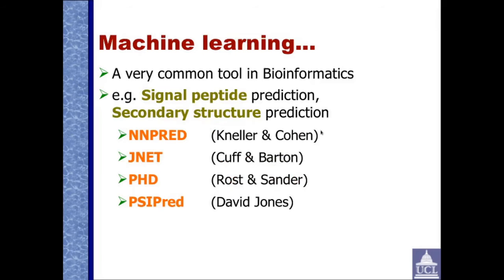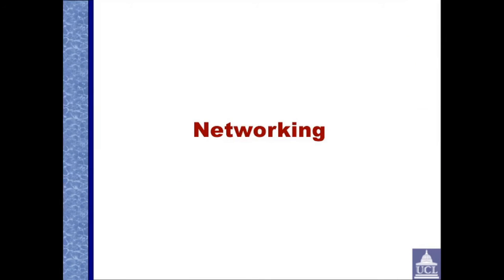Machine learning is a very common tool in bioinformatics these days. It's used in all sorts of things, from signal peptide prediction through to secondary structure prediction. These are a few examples of secondary structure prediction software and their authors. Of course, the big news in the last year is the AlphaFold2 approach, which has been used for predicting the three-dimensional structure of proteins by using this deep learning, these neural networks that have multiple layers, multiple hidden layers involved in them. You'll learn more about that later in the course.